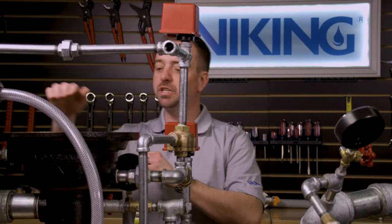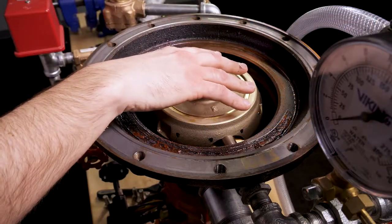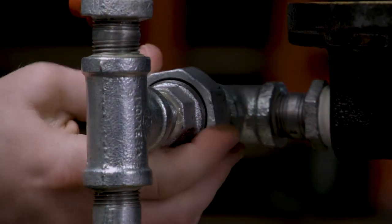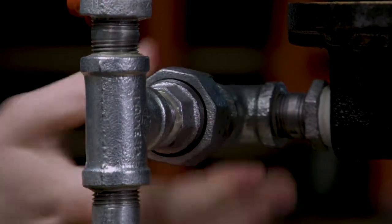Next, we will need to disconnect the prime coupling from the prime chamber assembly. To disconnect the prime coupling, we will first start by opening the union on the priming line.